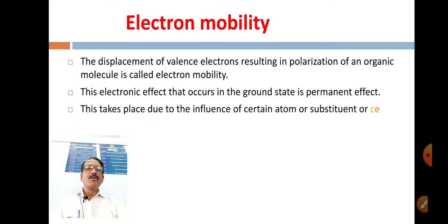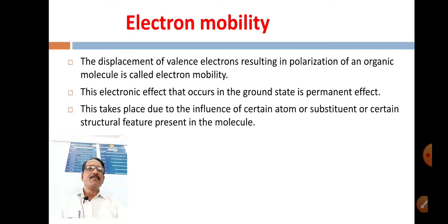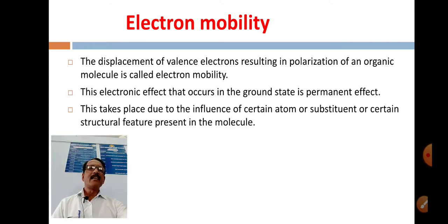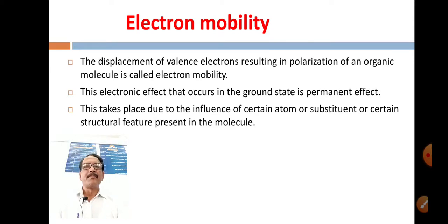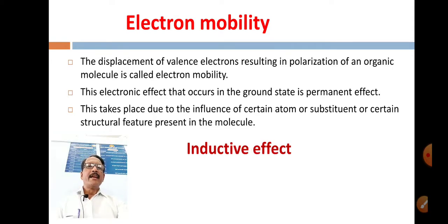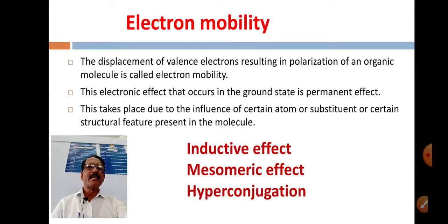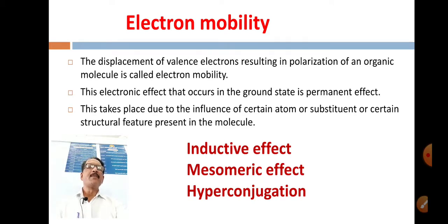Electron mobility takes place due to the influence of certain atoms, substituents, or structural features present in the molecule. In electron mobility, there are three different effects: the inductive effect, the mesomeric effect, and the hyperconjugation effect.